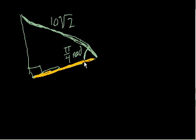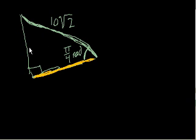Let's figure out what we know and what we need to figure out. We know the angle — pi over 4 radians, which is 45 degrees. This side is the hypotenuse of the triangle. What are we trying to figure out? We want the adjacent side to the angle. So we know the angle, we know the hypotenuse, and we want to figure out the adjacent side.